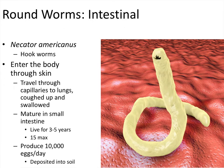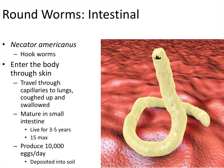Our next one is Necator americanus, most commonly called the hookworm. Instead of the traditional fecal-oral route, this one actually burrows through the skin on your body — most of the time through your feet, though it can technically burrow anywhere. It's easier for the worm to infect you if you already have a small cut. Once in the body, it travels through capillaries and venules up to the lungs, where you will cough it up and swallow it again.